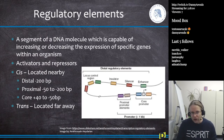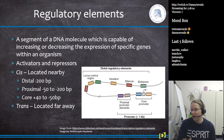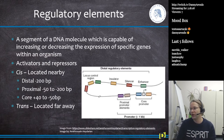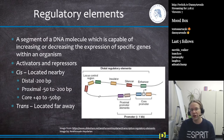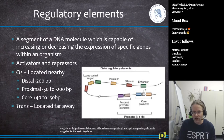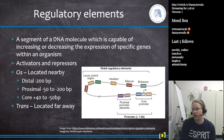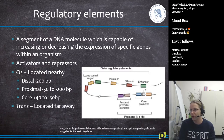Now a little more about regulatory elements. Every gene has an area in front of it and a small area behind it that regulates its expression. A regulatory element is defined as a segment of a DNA molecule capable of increasing or decreasing the expression of specific genes. There are two classes: activators, which upregulate a gene, and repressors, which downregulate it.